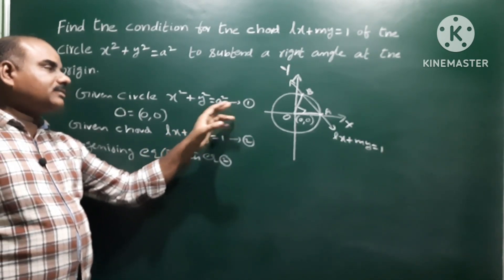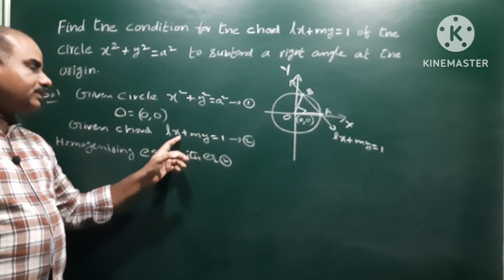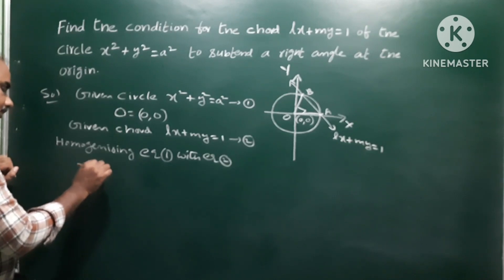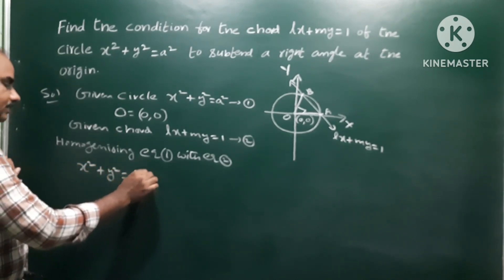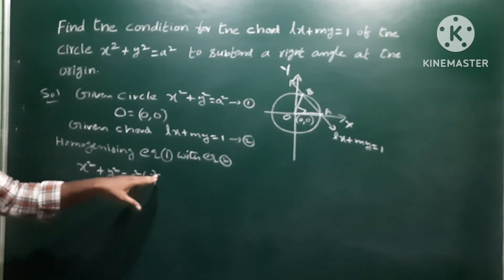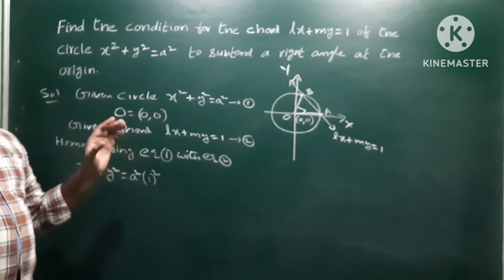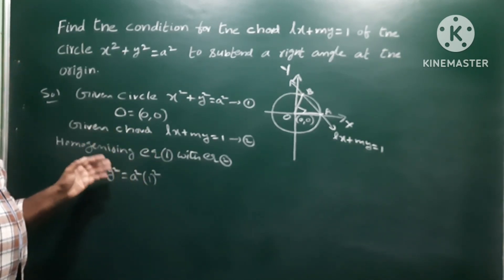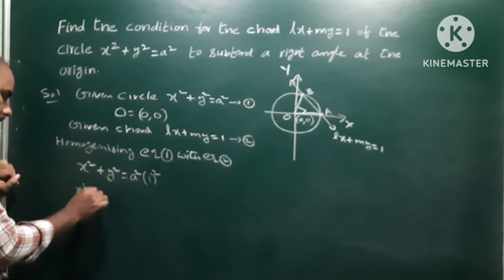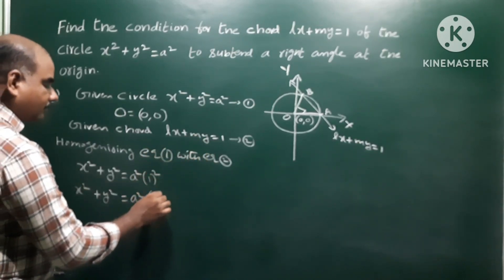One means Lx plus My. We substitute Lx plus My in place of 1. Then the equation is homogenized. So x squared plus y squared equals a squared into 1 squared, and the constant term is 1 squared. We write 1 as Lx plus My.